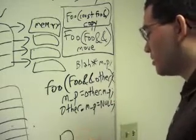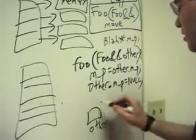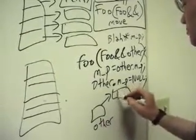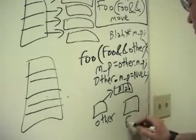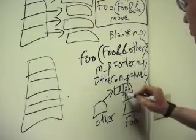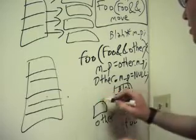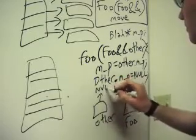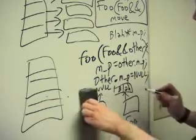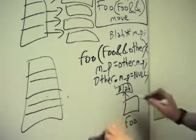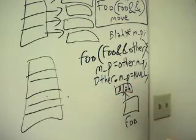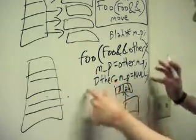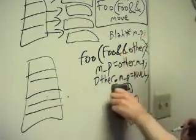So, we come in with other owning some blah. And then what we do is we construct a new foo, set its pointer, null this guy out. And then when it's destroyed, it doesn't have to free anything. And foo is left owning the blah, we've simply moved its ownership over with just a fast pointer twiddling. Just two assignments and we're done. Excellent.